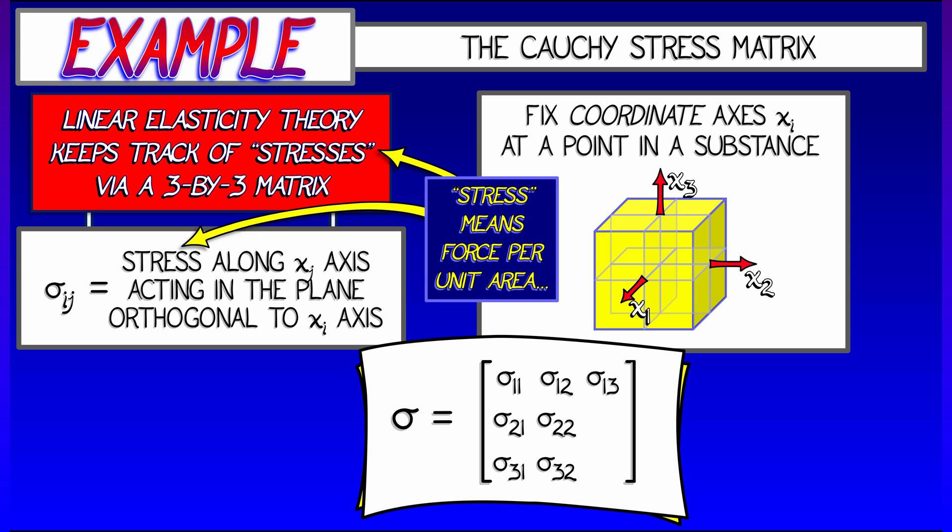Here i and j range from 1 to 3, and these entries are bundled together into a single matrix called σ.